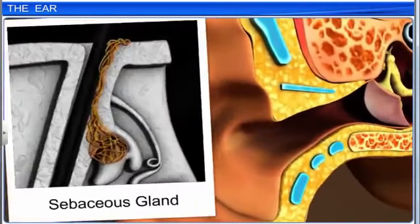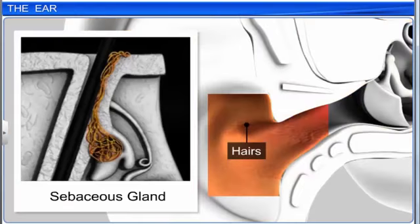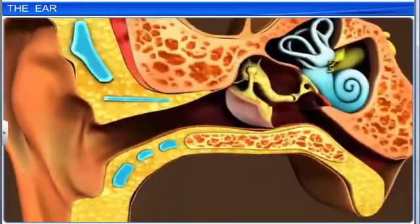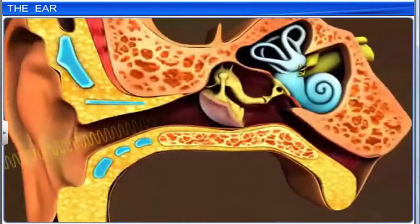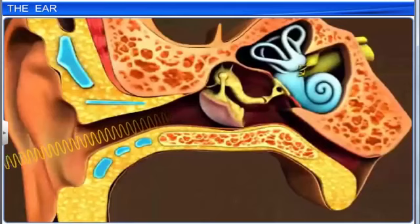Very fine hairs and wax-secreting sebaceous glands are present on the skin of the pinna and the meatus, which prevent dust and small insects from entering the ear. The pinna is responsible for collecting vibrations in the air and directing sound into the meatus.